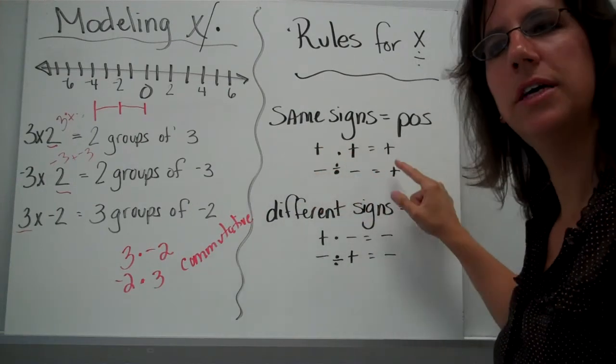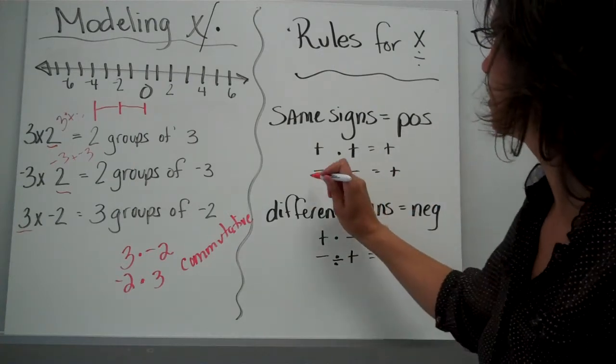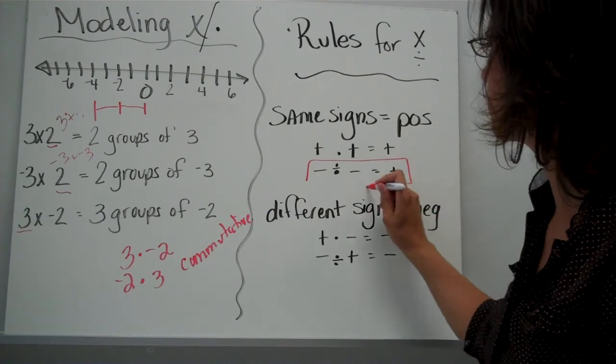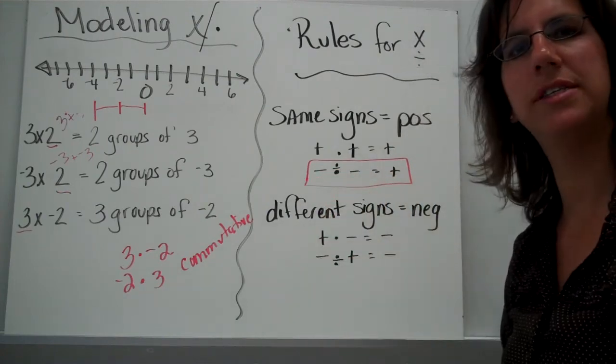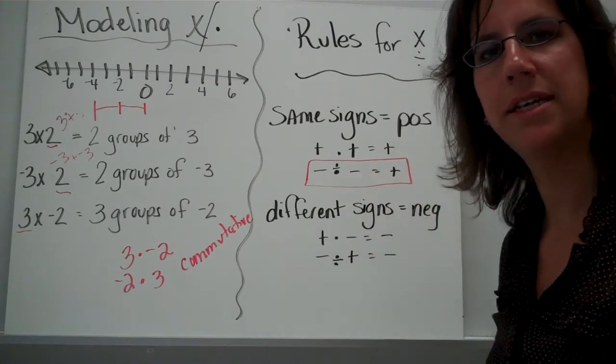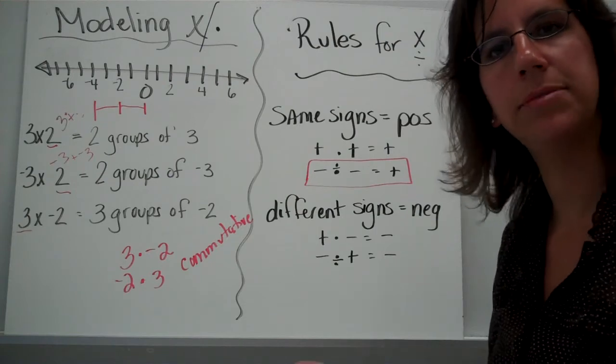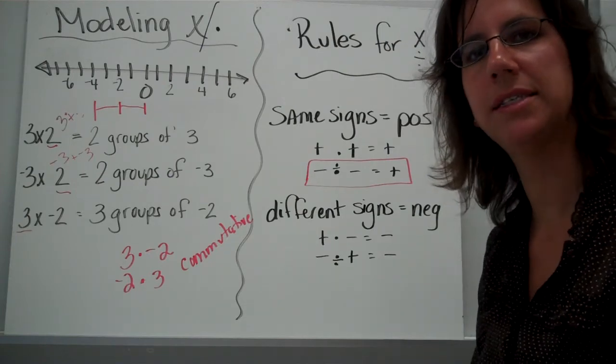And the same goes along with division. Positive divided by positive is positive. Here's where some students get mixed up and confused. A negative divided by a negative is a positive answer. And the same thing would go for multiplying. If you had a negative times a negative, you also get a positive answer.